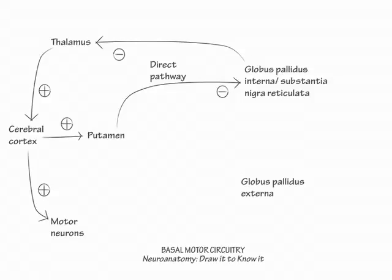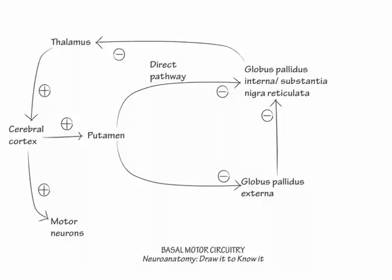Let's draw out the indirect pathway. First, show the putamen inhibit the globus pallidus externa. Then, show the globus pallidus externa inhibit the globus pallidus interna and substantia nigra reticulata combination.